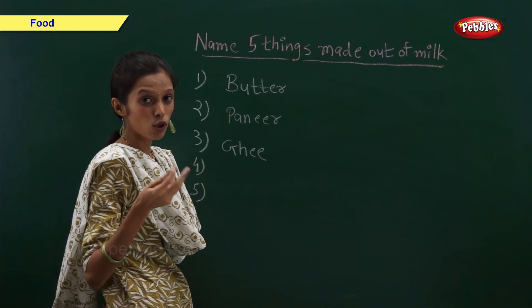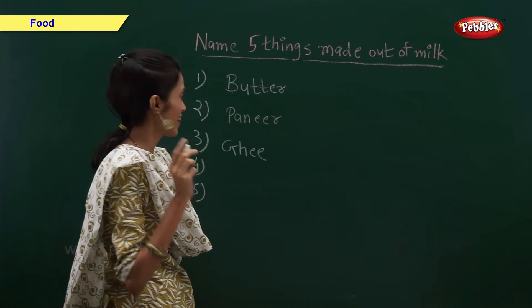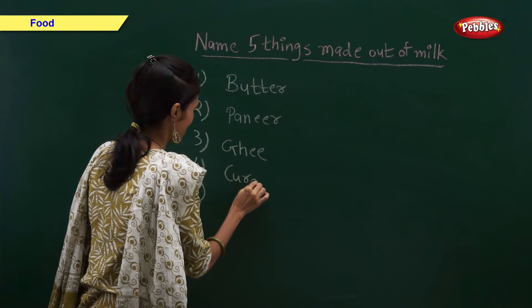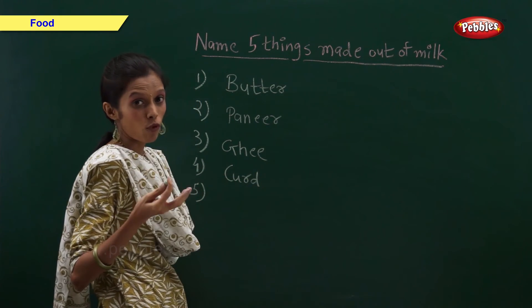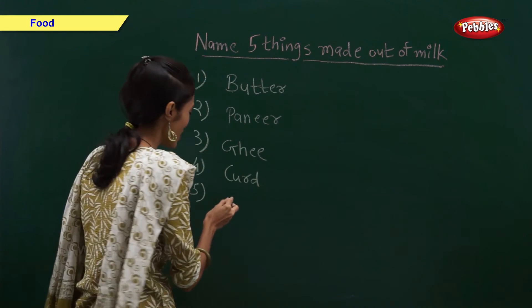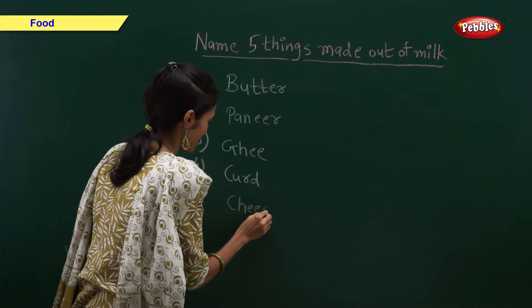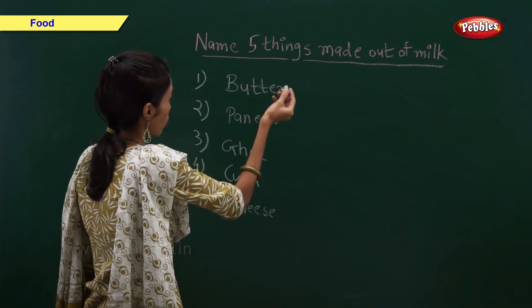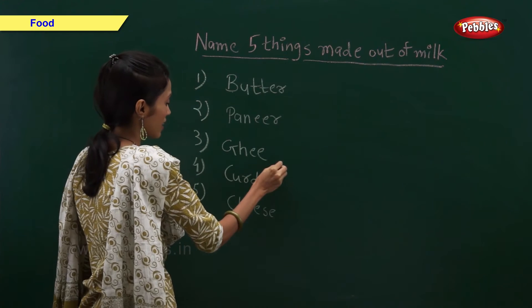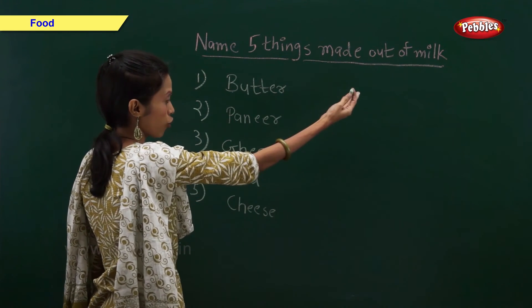What else is made out of milk? Yes — curd. What else? Yes — cheese. So, butter, paneer, ghee, curd, and cheese are made out of milk.